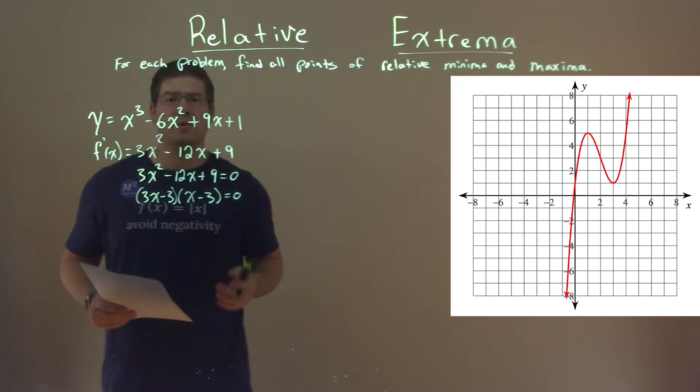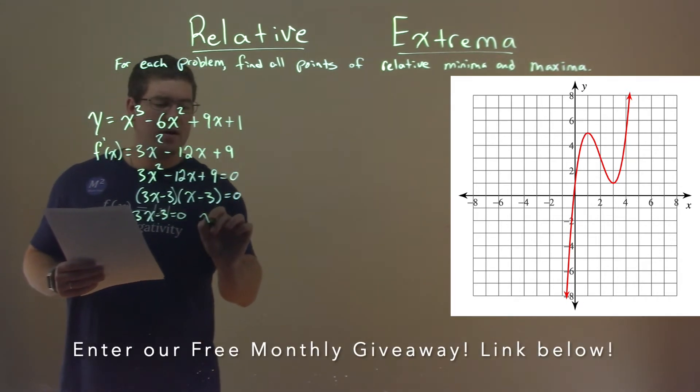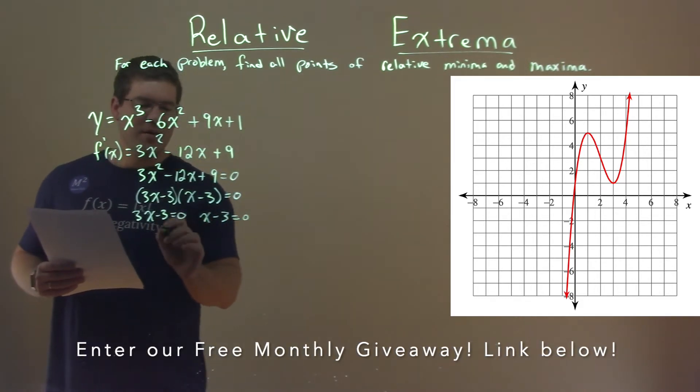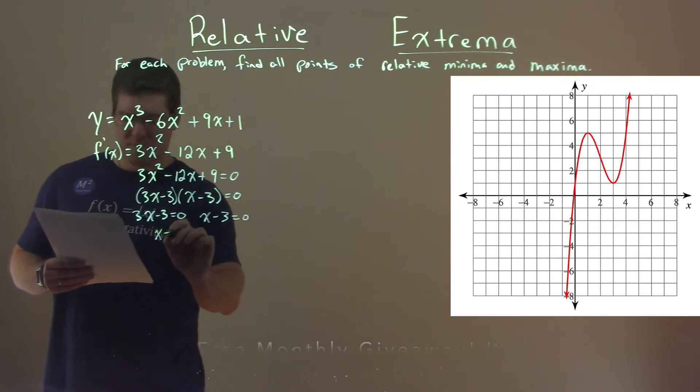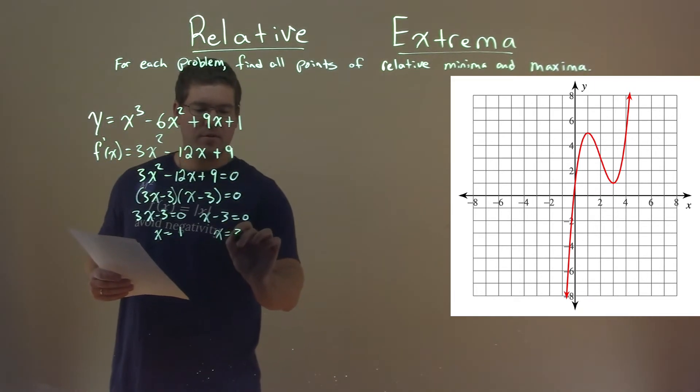And so we can set each part equal to 0 and solve. So 3x minus 3 equals 0, x minus 3 equals 0. Hopefully you know how to do this now. Add 3 to both sides, divided by 3, and x equals 1. Add 3 to both sides, and x equals positive 3.